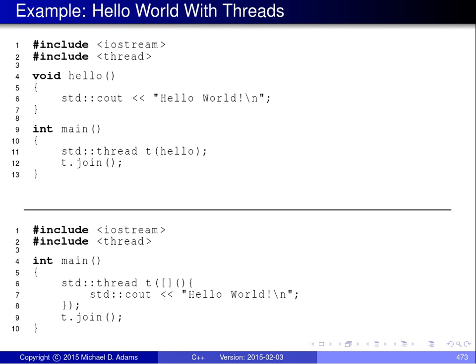It's worthwhile to consider a simple example of a program that utilizes the Thread class. On this slide there are two versions of the classic Hello World program rewritten to make use of multiple threads. The Hello function simply prints to standard output the string 'Hello World!' followed by a new line. The basic idea is to execute the Hello function in a new thread rather than in the thread executing the main function.